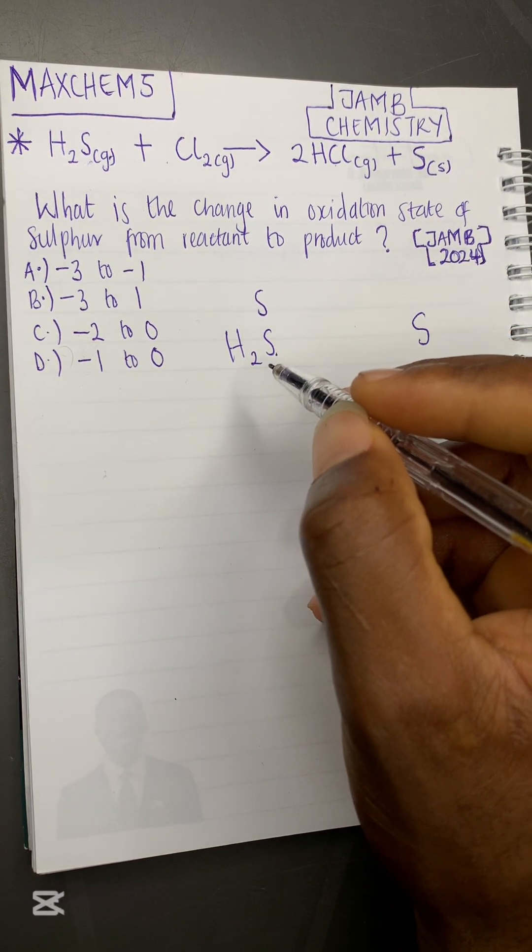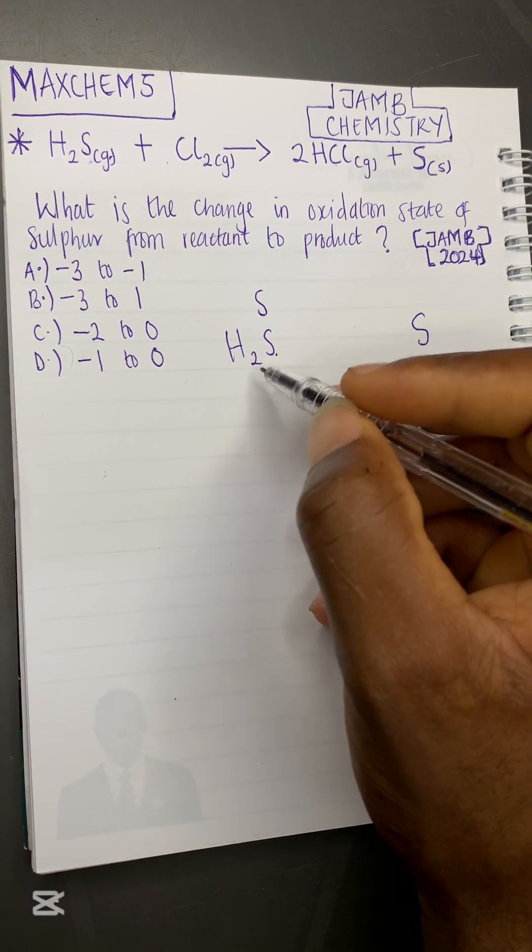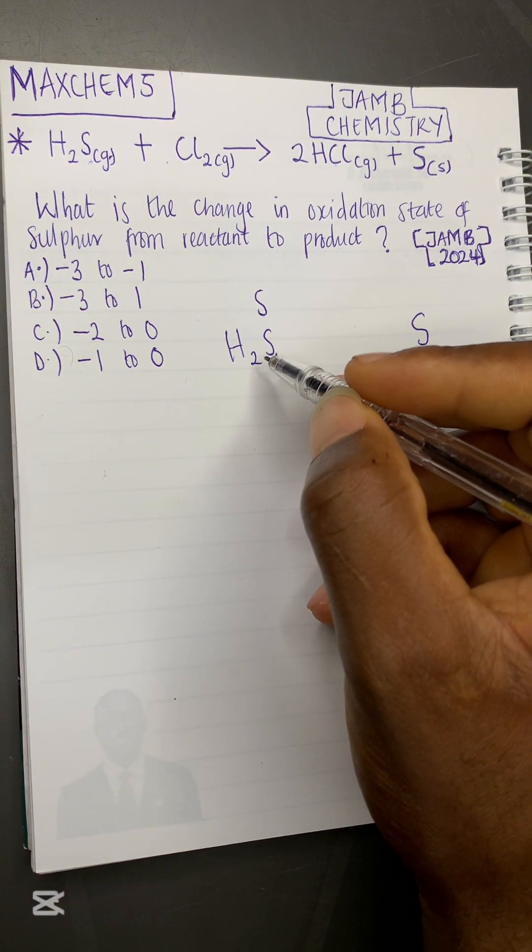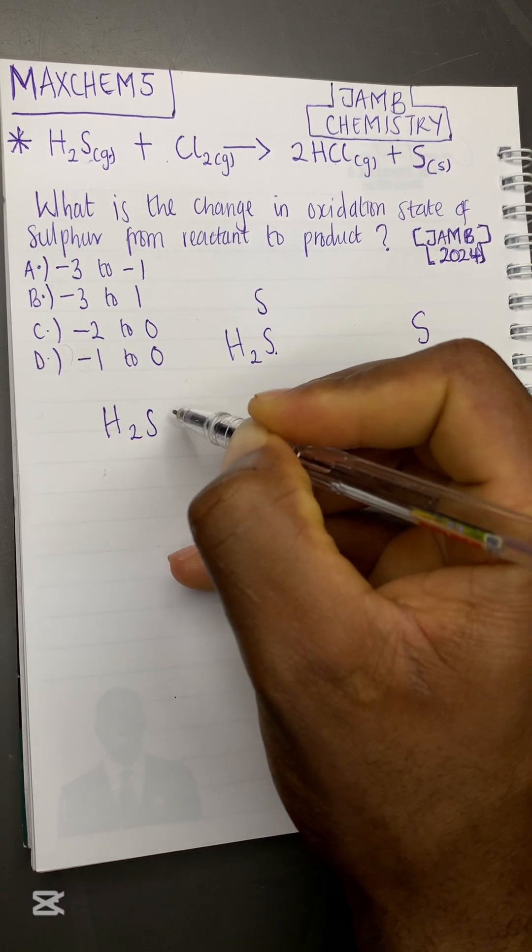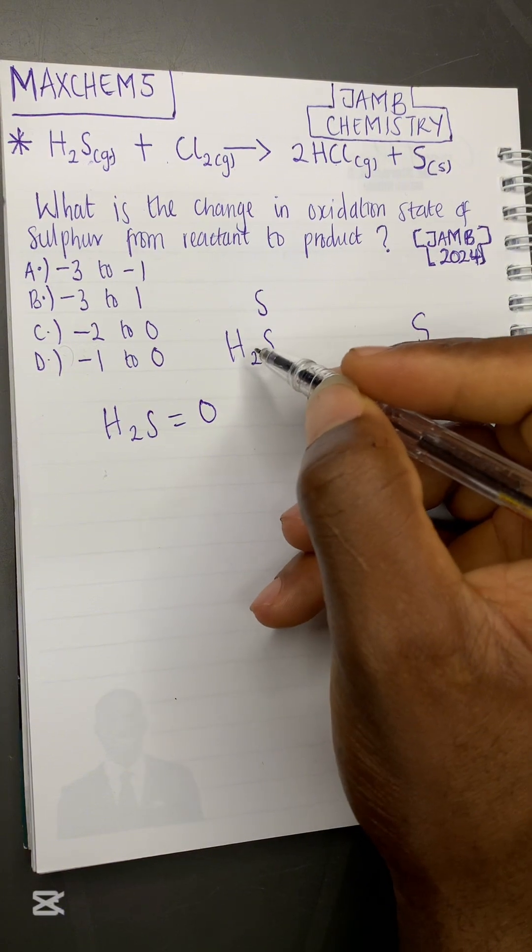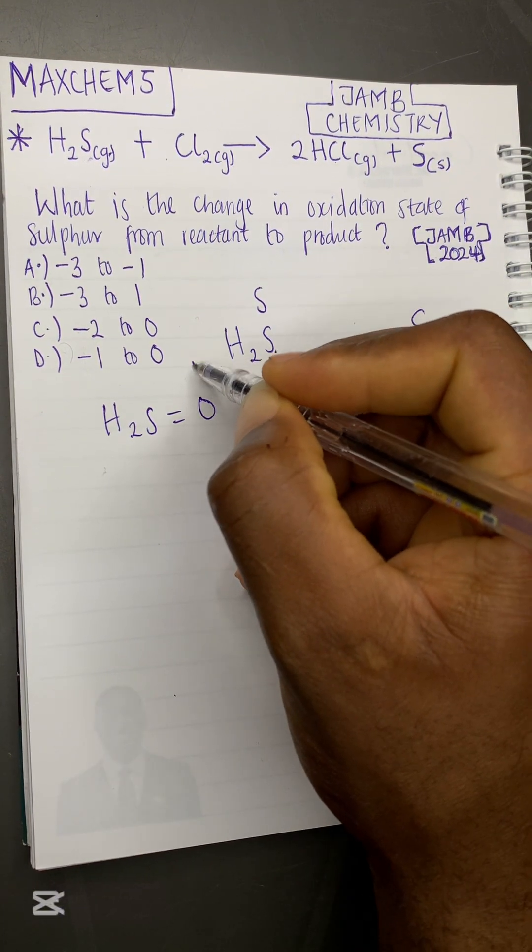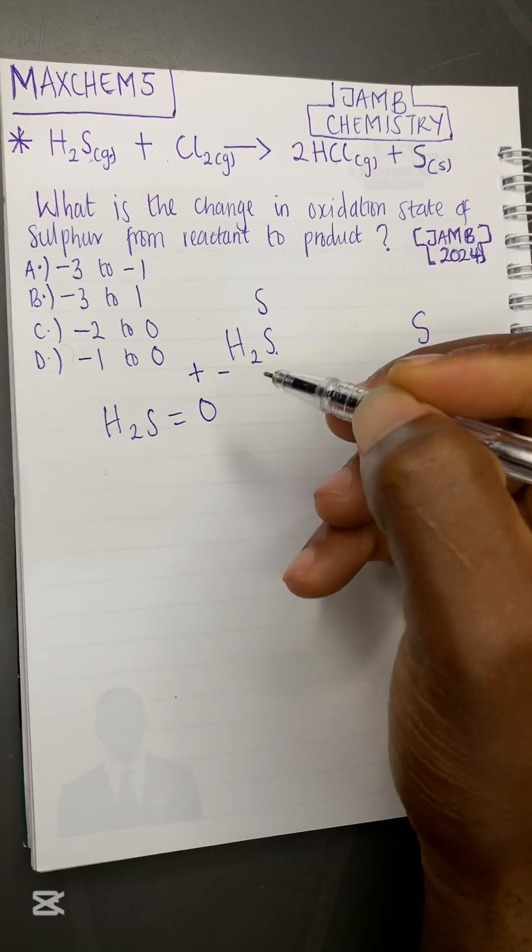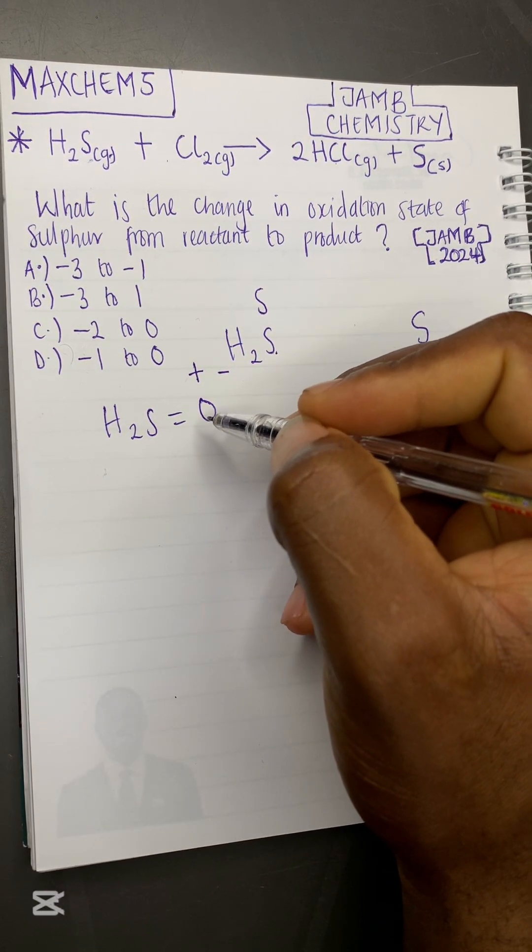One of the rules of valency tells us that the total oxidation states of a compound that is neutral is always equal to zero. So the total oxidation state of H₂S is equal to zero. Why? Because H₂S is a neutral compound. It does not have any charge. This is a neutral compound. It does not have a plus or a minus sign.